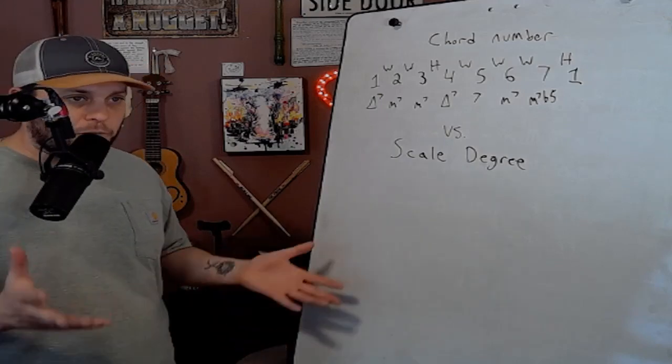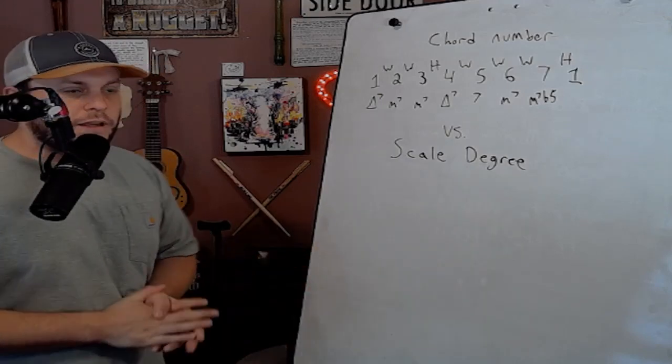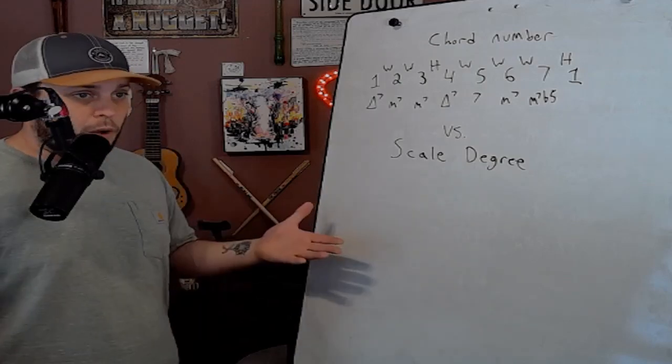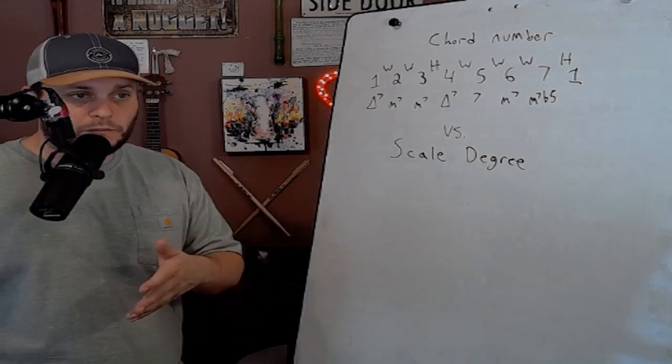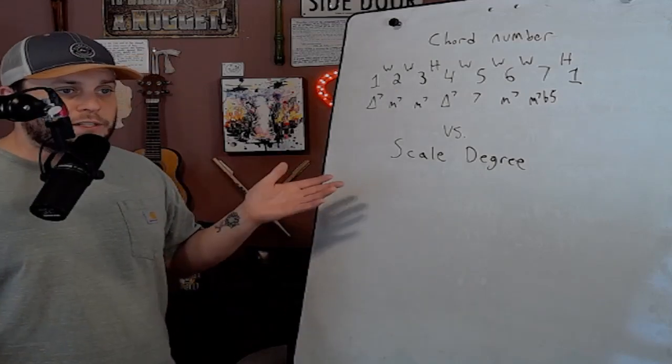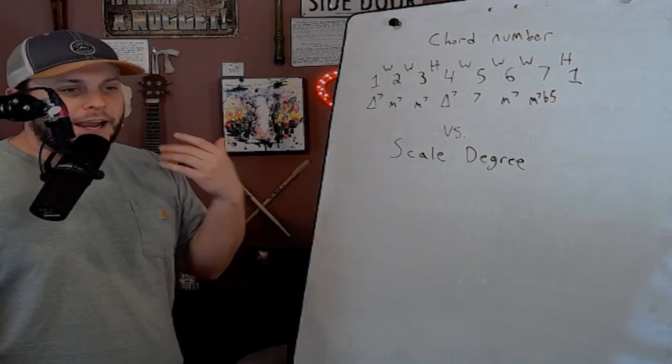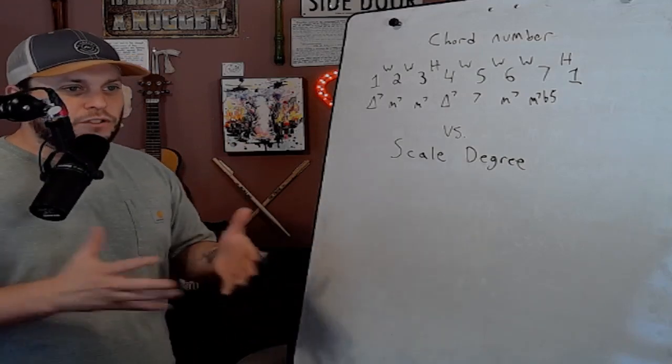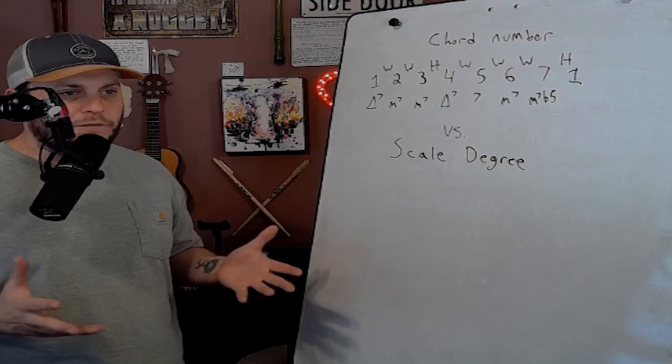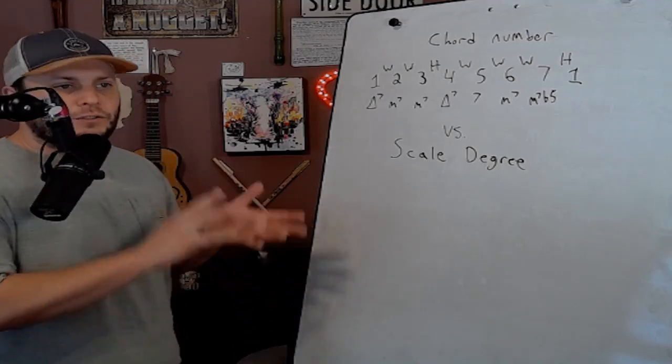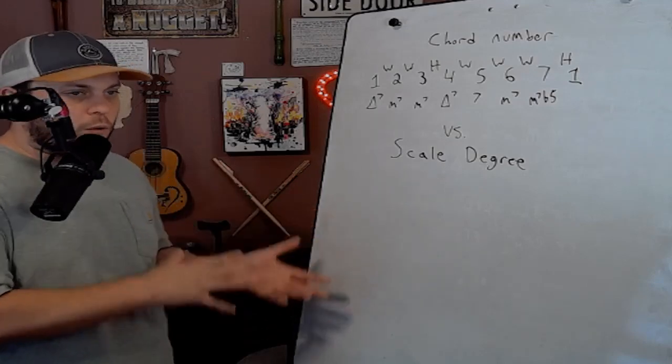The next note, and we've learned before that a minor seven chord is the half step formula three, four, three - go up three half steps, four half steps, three half steps to make that chord. You'll know that the second note in a D minor seven is an F. So what is that note to a D? That's really what we're trying to figure out, is that every single note means a certain thing numerically to another note or another chord.